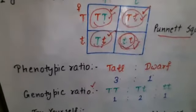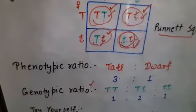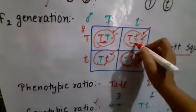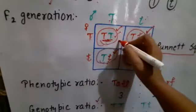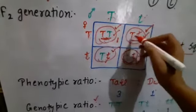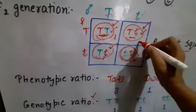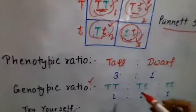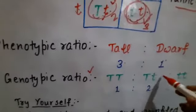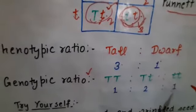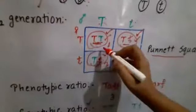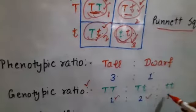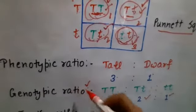Now the second ratio — genotypic ratio — is the ratio of genotypes. As you can see in the cross, there are three types of genotypes: TT is the first type, Tt is the second type, and tt is the third type. TT appears once, Tt appears twice, and tt appears once. So the genotypic ratio is 1:2:1.